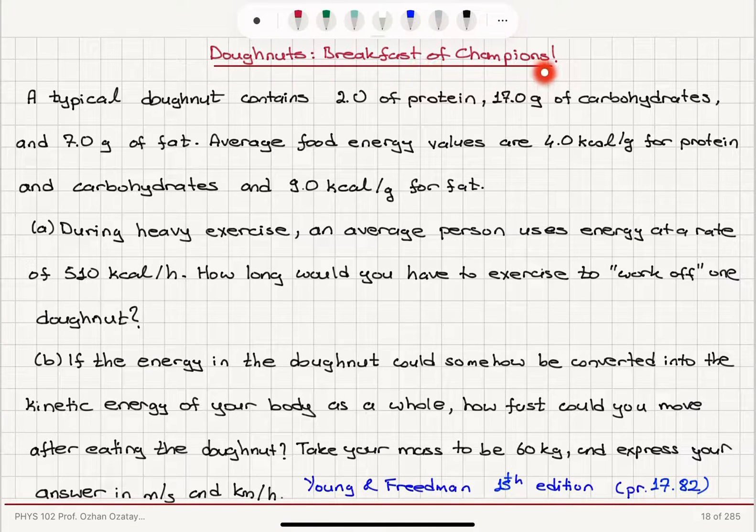Donuts, breakfast of champions. A typical donut contains 2 grams of protein, 17 grams of carbohydrates.